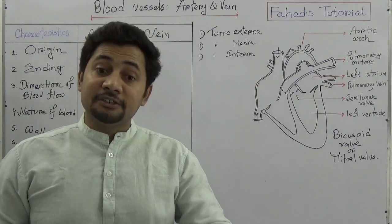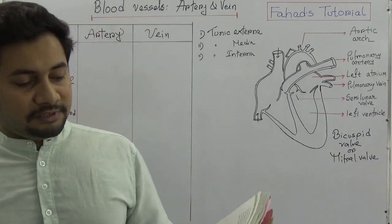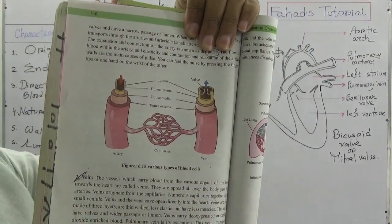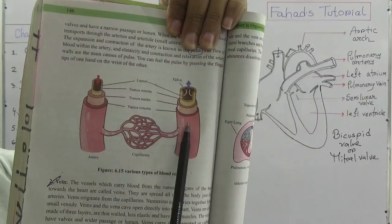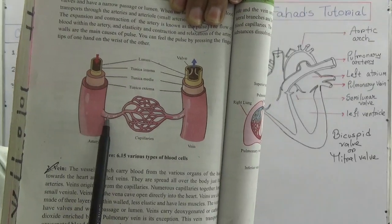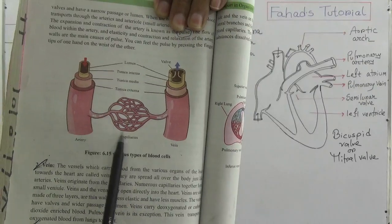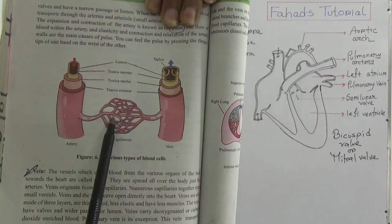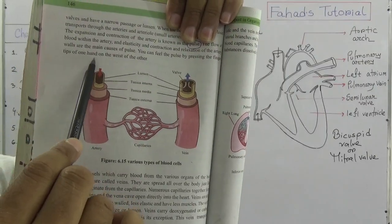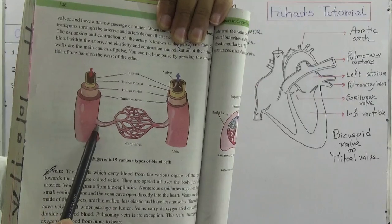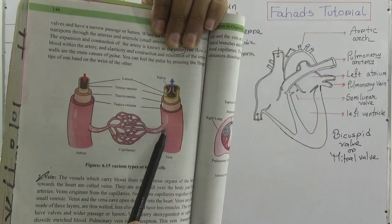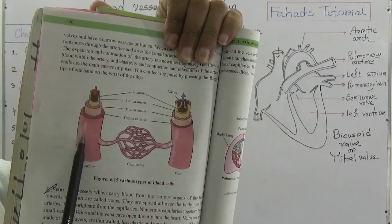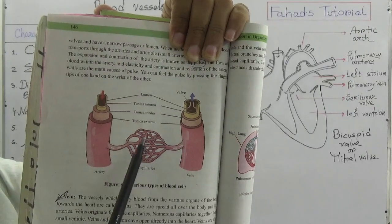Looking at a diagram, we can see an artery and a vein side by side. The artery is subdivided into hair-like, delicate blood vessels visible in the muscle fibers — these are called capillaries. Blood flows from the heart through arteries, then into capillaries, and then into veins. So arteries carry oxygenated blood and veins carry deoxygenated blood from the capillaries.